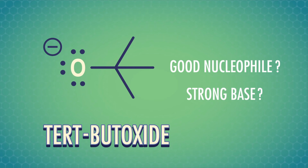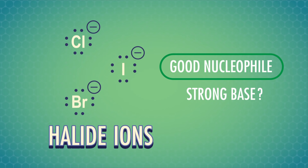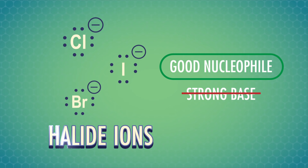We'll use basicity to describe how readily a nucleophile attacks hydrogen atoms specifically. When we talk about a nucleophile acting as a base, we mean it's acting as a proton acceptor. Remember, hydrogen atoms have one proton, one electron, and no neutrons. So when we talk about protons, we mean a hydrogen atom without its electron. Different groups have different amounts of nucleophilicity and basicity, which lets us know what sort of reaction they're likely to cause. For example, something bulky like the tert-butoxide anion isn't a great nucleophile, but is a strong base. Likewise, something can be a good nucleophile but a weak base, such as the halide ions.